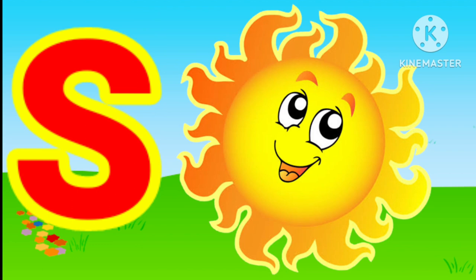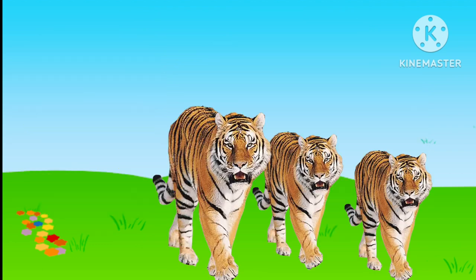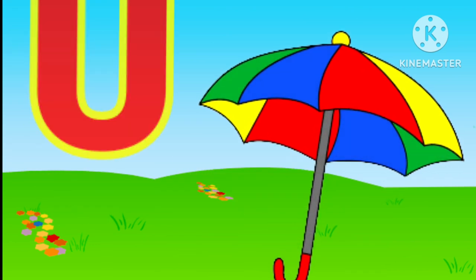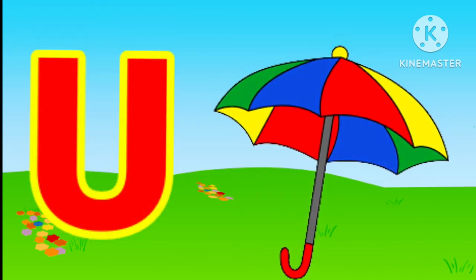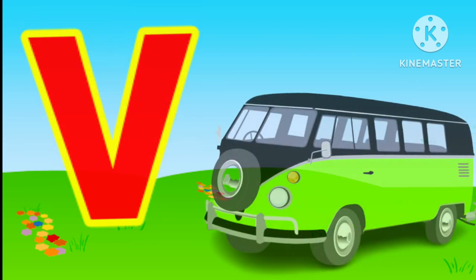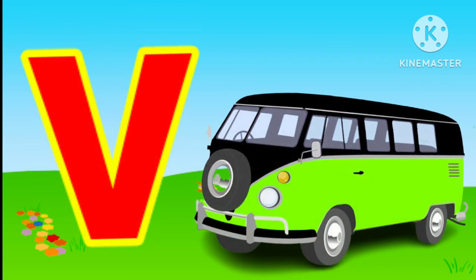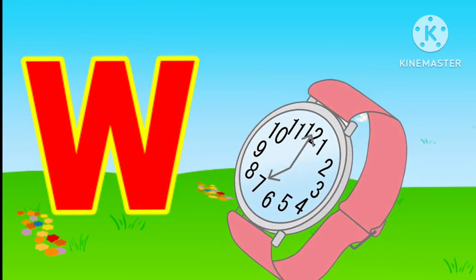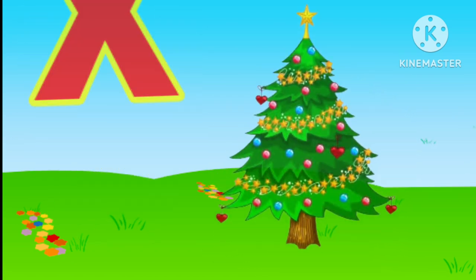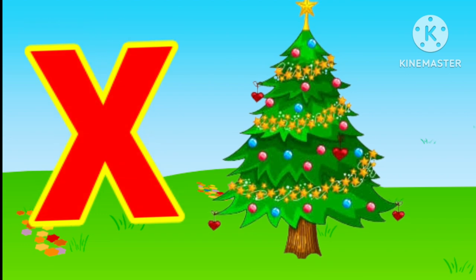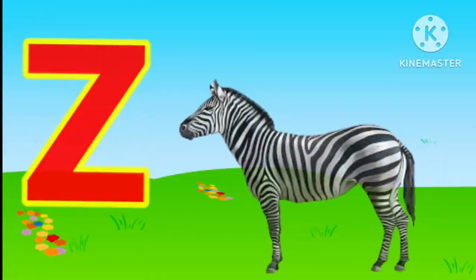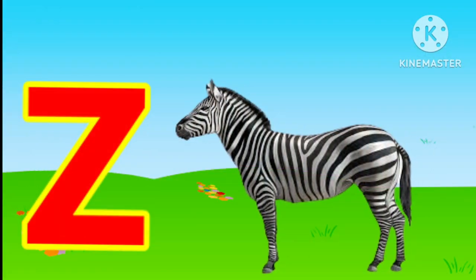S for sun, T for tiger, U for umbrella, B for van, W for watch, X for atmosphere, Y for yak, Z for zebra.